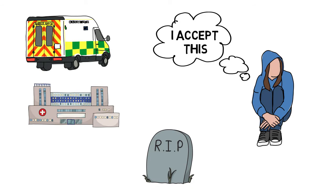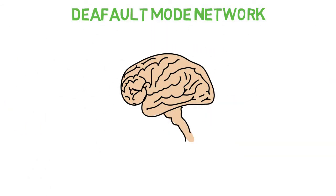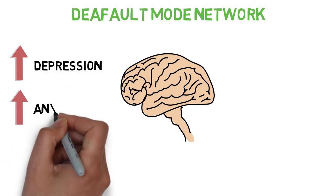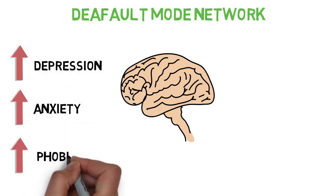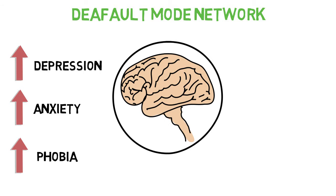The default mode network is a distinct area of the brain that, if overactive, is associated with depression, anxiety, and social phobia. fMRI brain scans show that ayahuasca causes a significant decrease in activity within the default mode network.